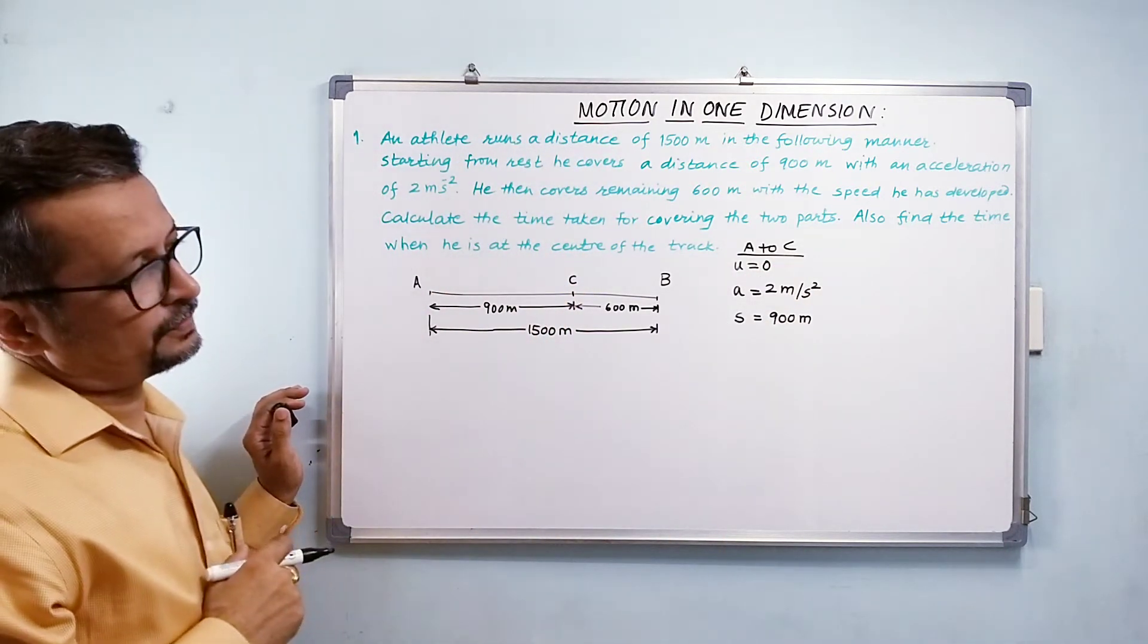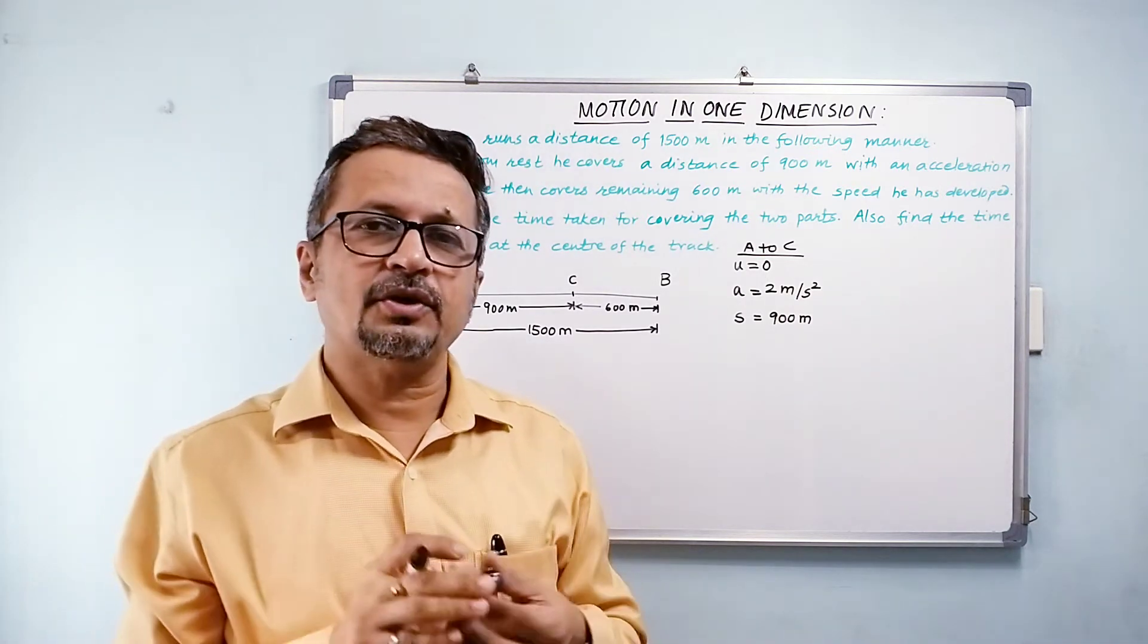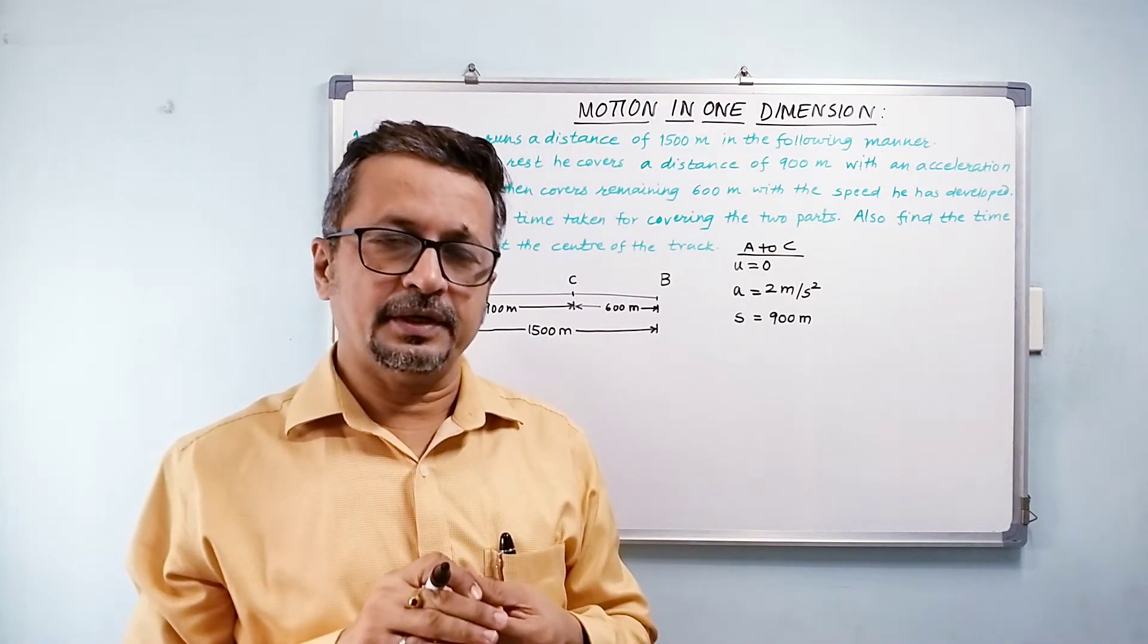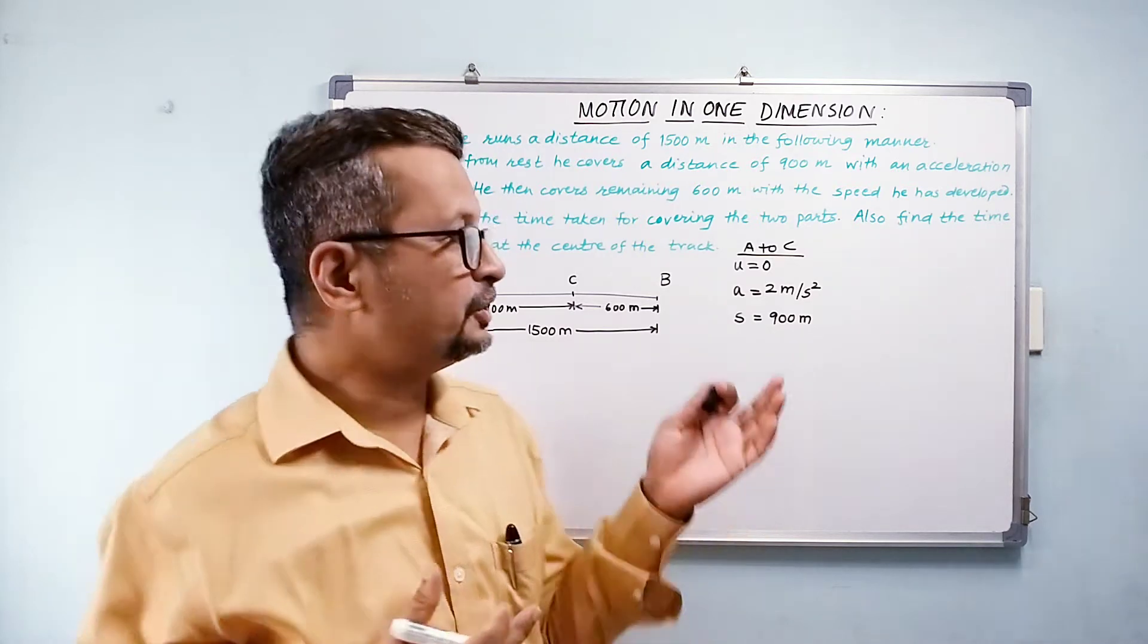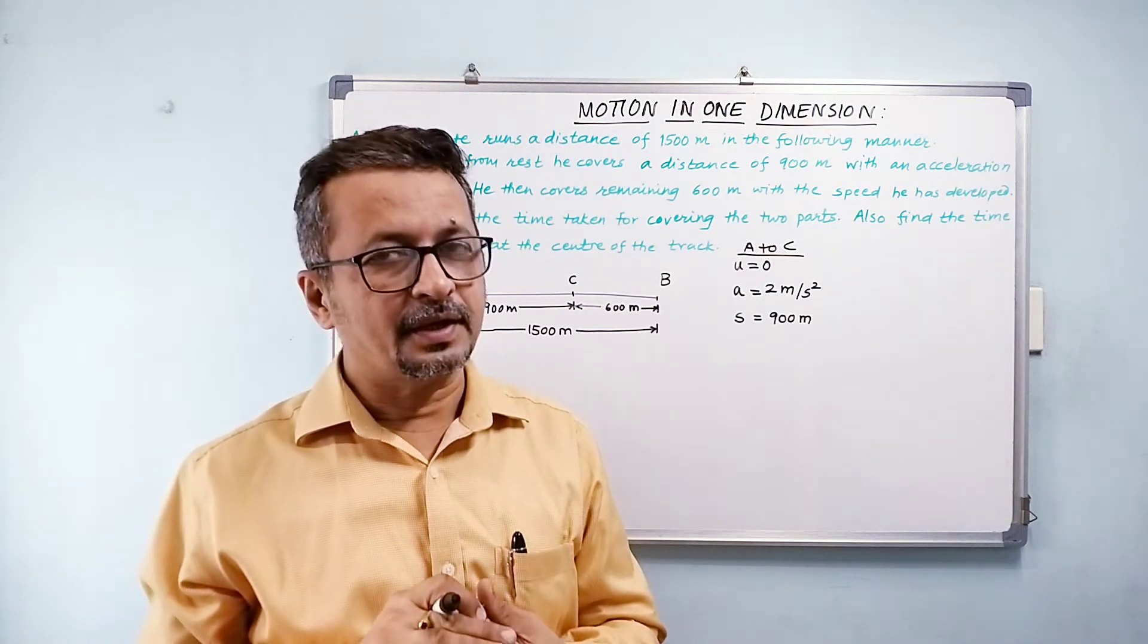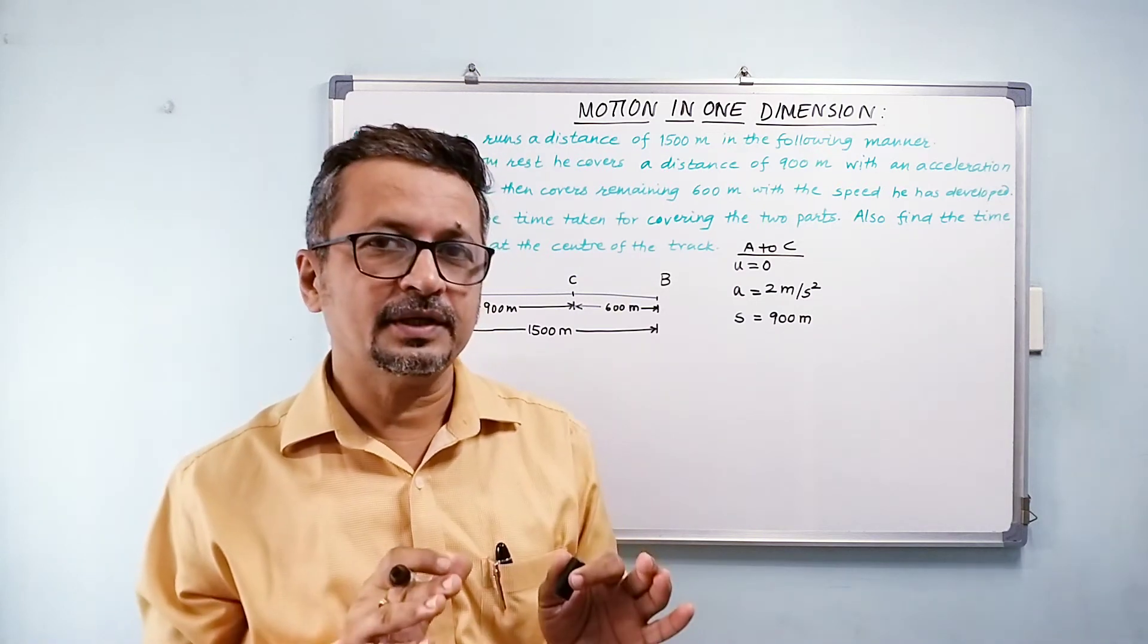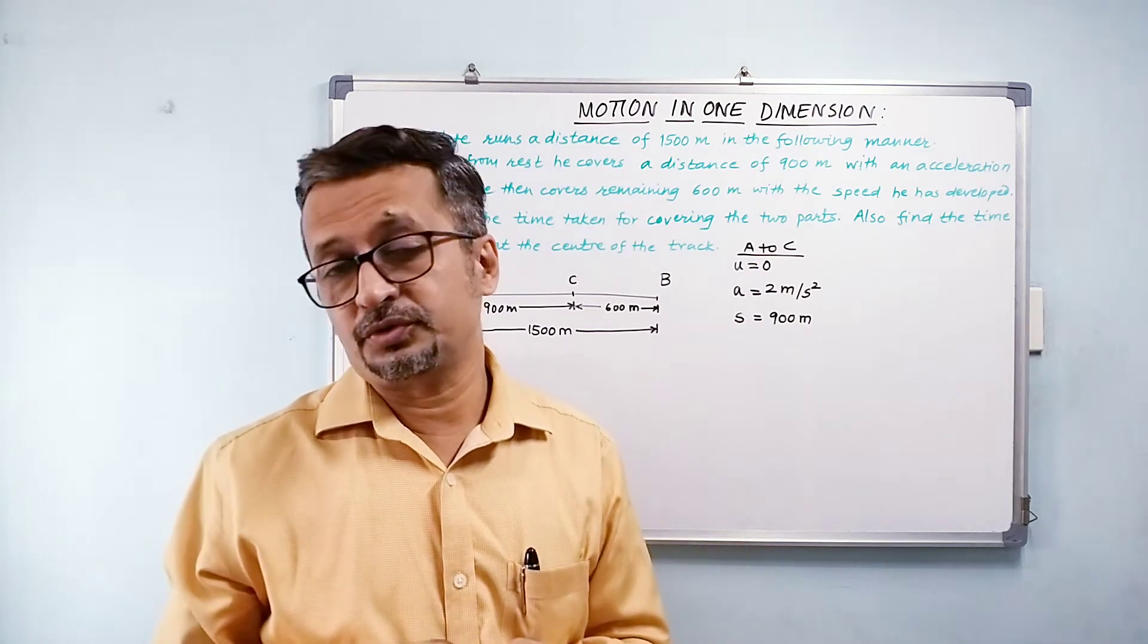Now how do we do this? Now I can use any of the three kinematical equations. Now first equation is v equals u plus at. So I know that u is 0. I know a. I don't know v. And I also don't know t. So first equation I would not be using.